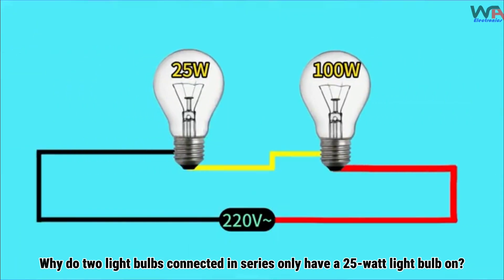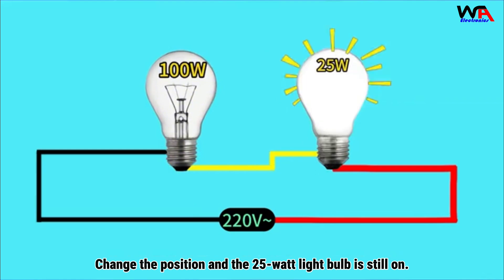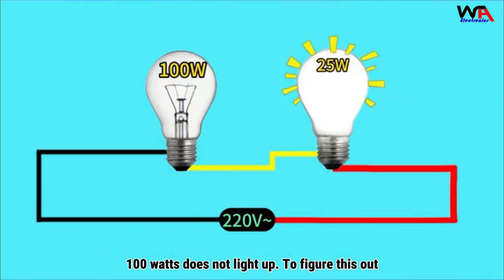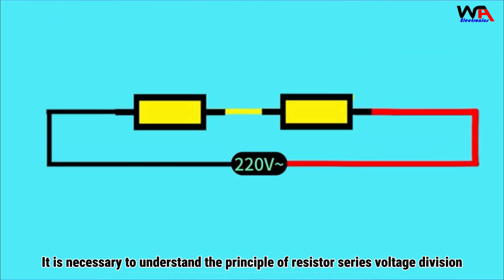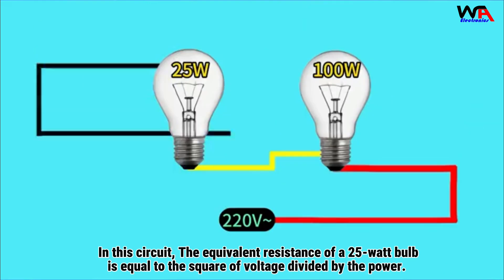Why do two light bulbs connected in series only have a 25-watt light bulb on? A 100-watt light bulb doesn't work. Change the position and the 25-watt light bulb is still on, 100 watts does not light up. To figure this out, it is necessary to understand the principle of resistor series voltage division.